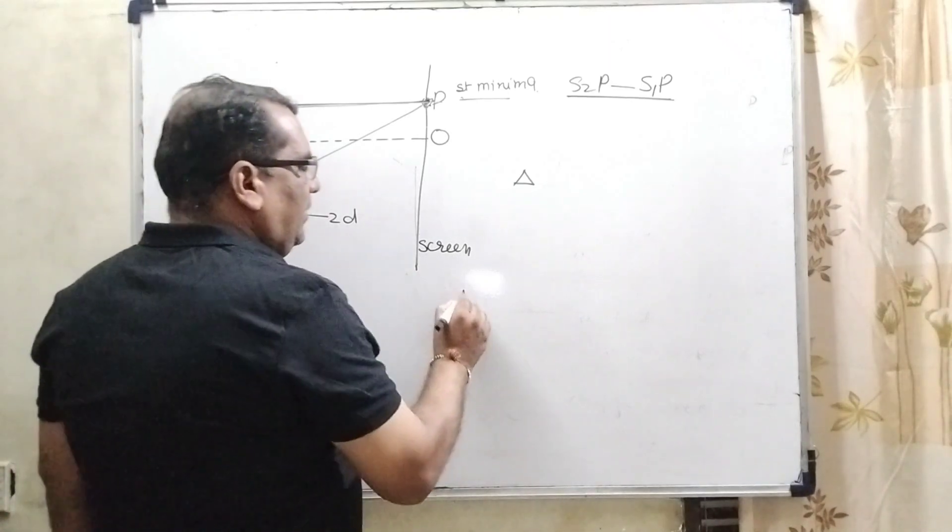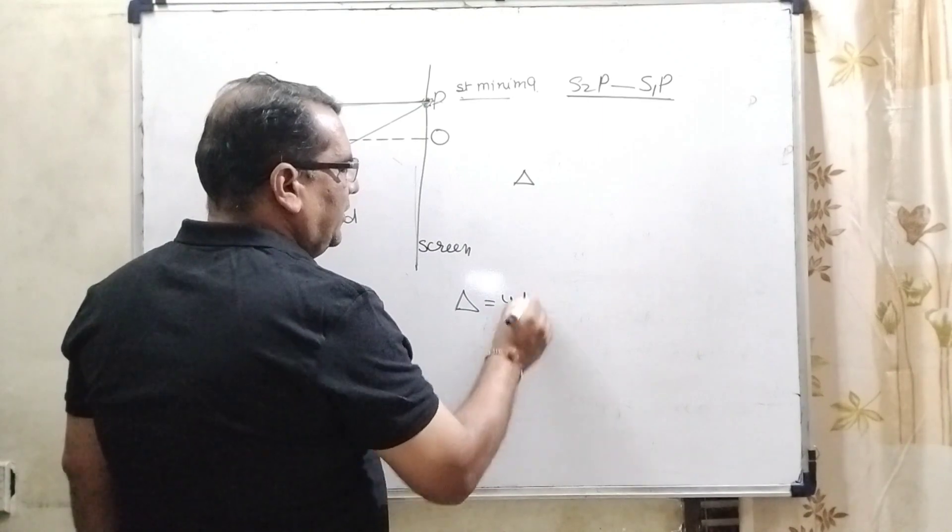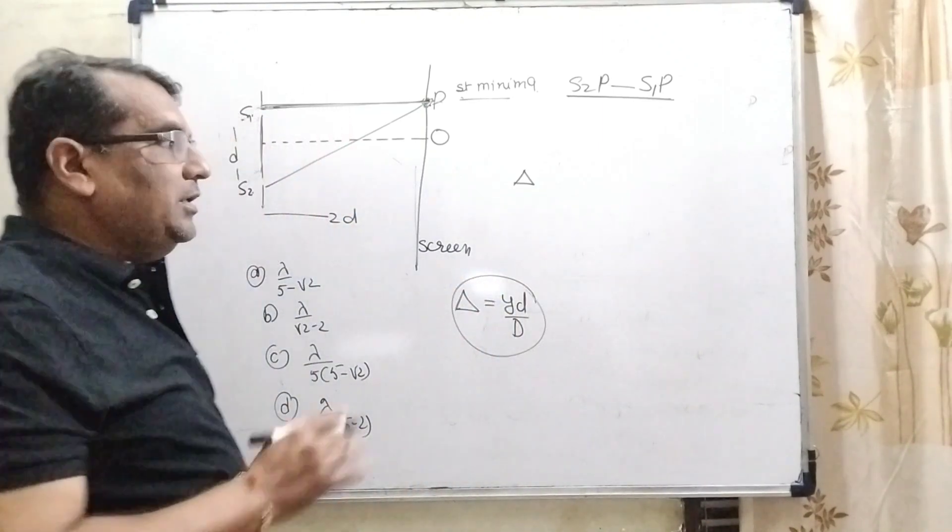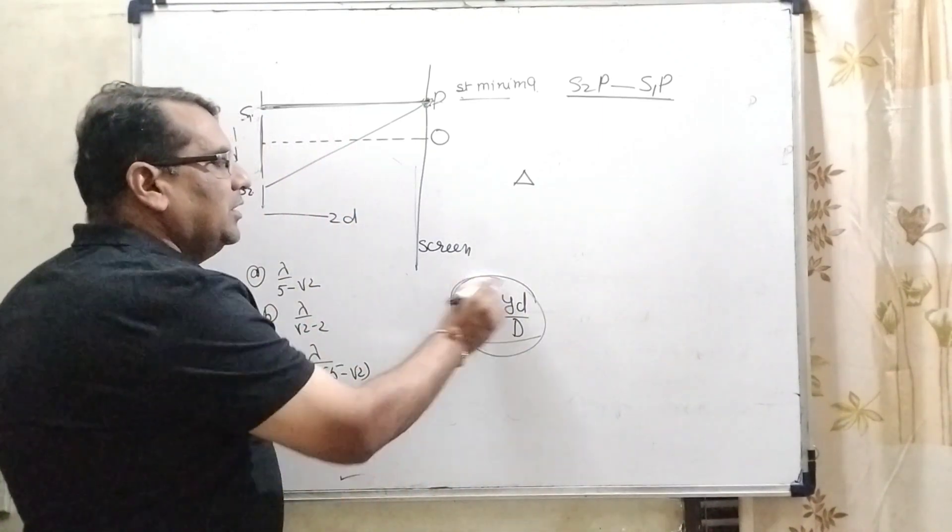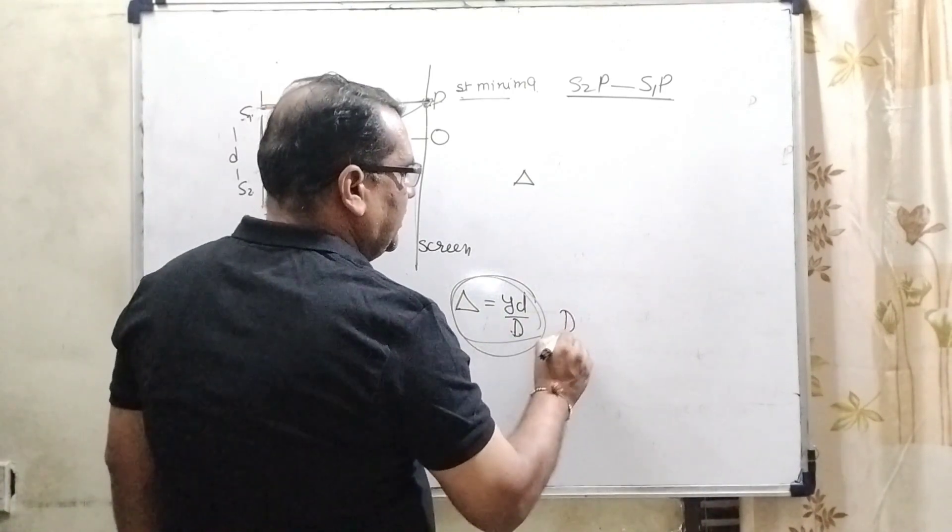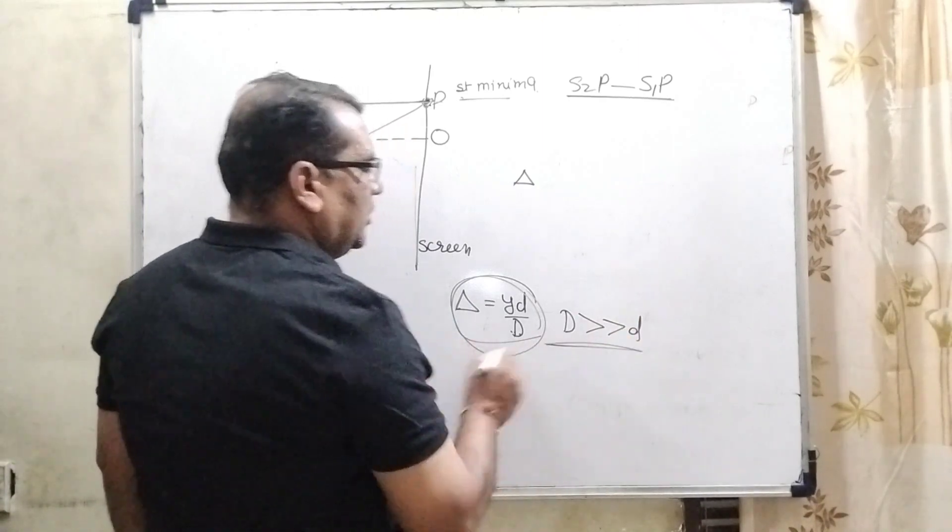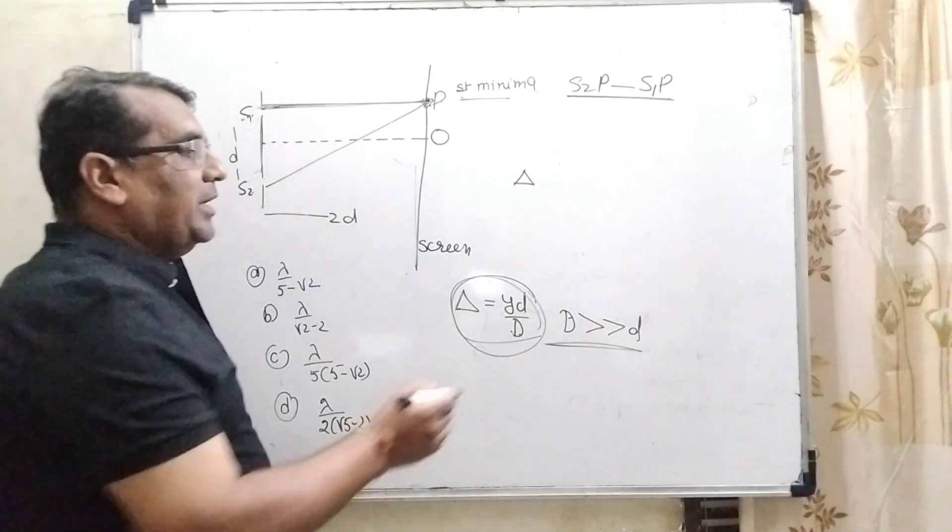You know very well that path difference can also be written as y small d upon capital D. But in this question, we are not using this formula. Why? Because here in this condition, capital D is greater than d.